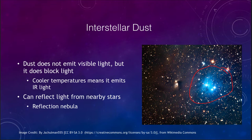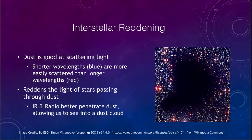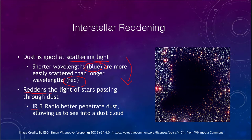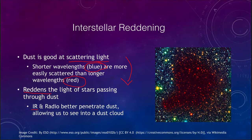The dust does two things to light that passes through it. It scatters light — shorter wavelengths (blue) are more easily scattered than longer red wavelengths. It also reddens the light of stars passing through the dust, because the light most likely to pass through is red light. So if we look at the same region in the infrared, we see something quite different: infrared wavelengths are better able to penetrate the dust and allow us to actually study what is going on there.